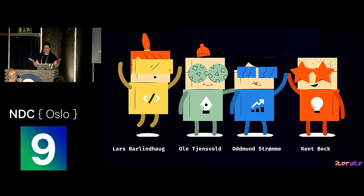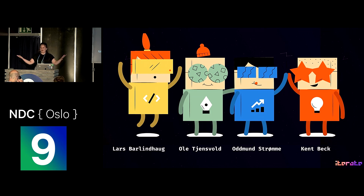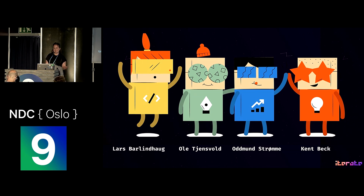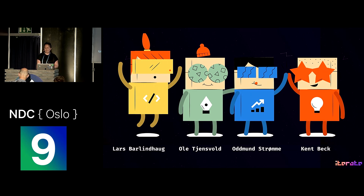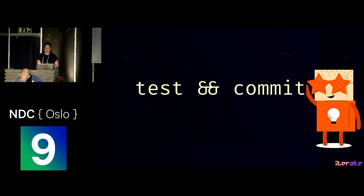Kent Beck is famous for extreme programming, test-driven development, the Agile manifesto, and a lot of other stuff. They sat down for a week to code, and Kent Beck had a couple of ideas he wanted to try out — one of them being test and commit.